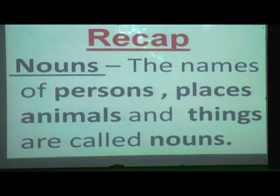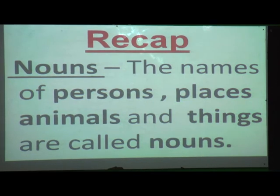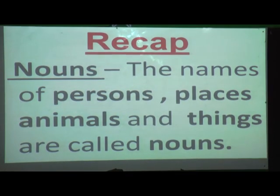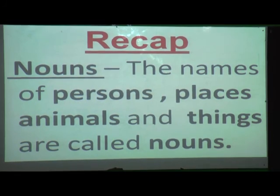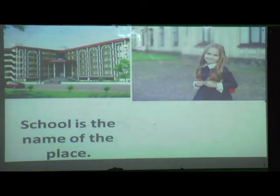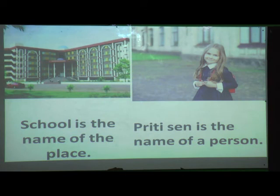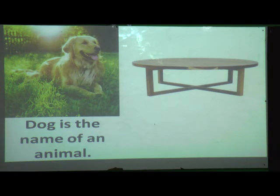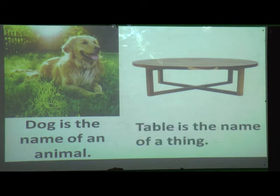This is our recap - lesson number six, which was about nouns. What is a noun? The name of a person, place, animals, and things are called nouns. For example: school is the name of a place, girl is the name of a person, dog is the name of an animal, and table is the name of a thing.